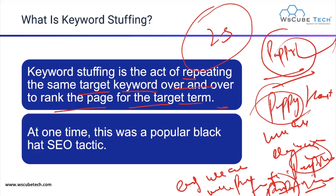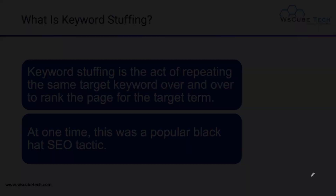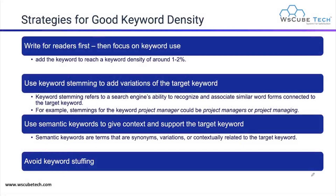Keyword stuffing was at one time a popular black hat SEO technique. However, it is not approved by Google. These are the guidelines which are strictly banned by Google. If you use this activity on your website, it will be considered a black hat SEO tactic.